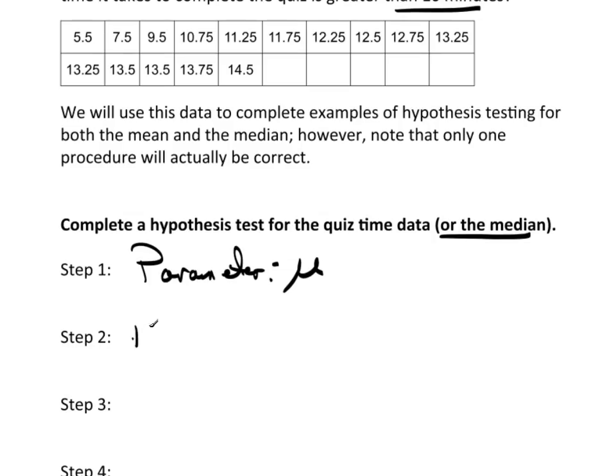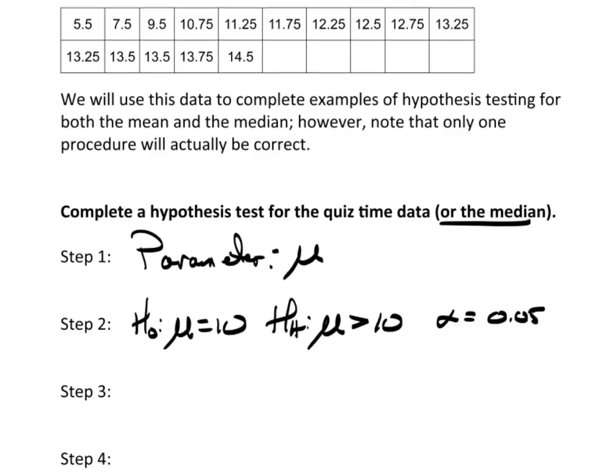So the null hypothesis would be that the mean is equal to 10. The alternative hypothesis would be that the mean is greater than 10. So this is exactly the same thing we did before. Because the processes start out to be essentially identical. And then we'll set alpha at 0.05. This is what we'll compare our p-value to.